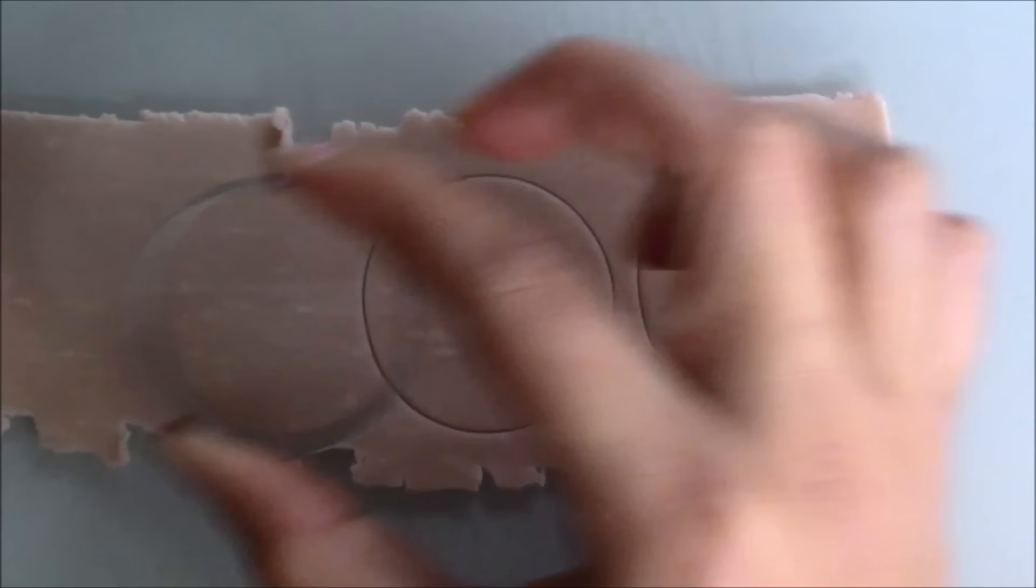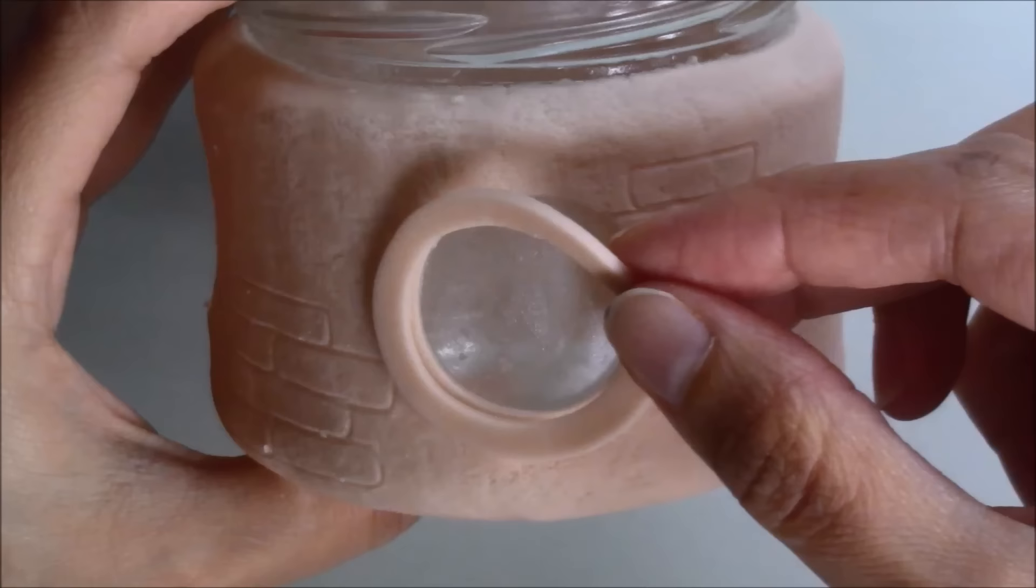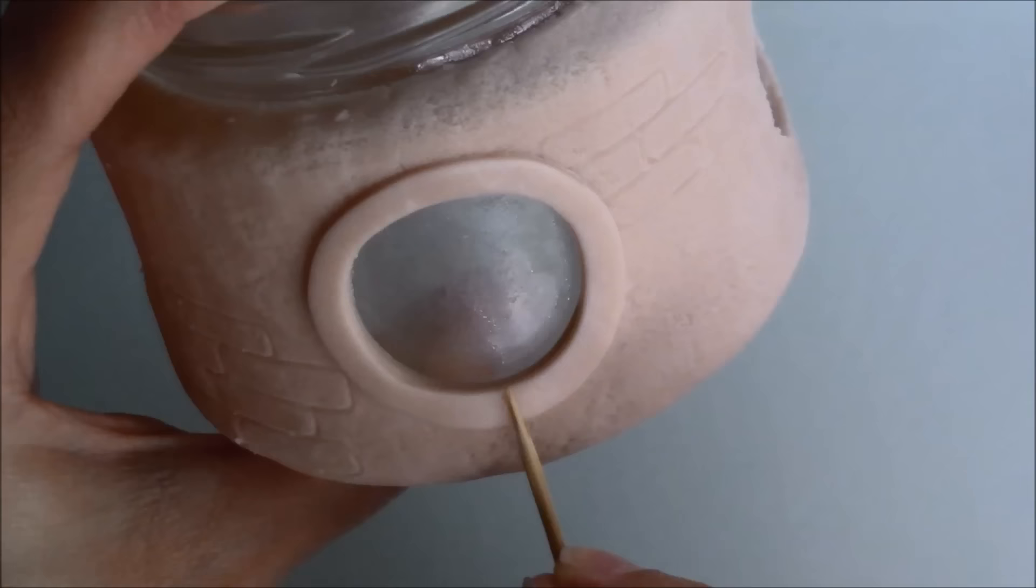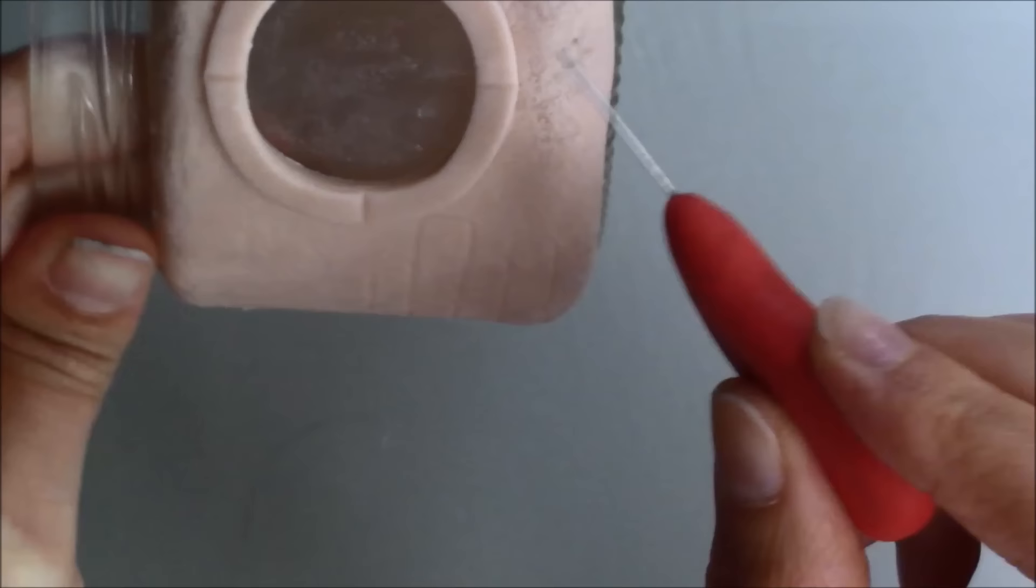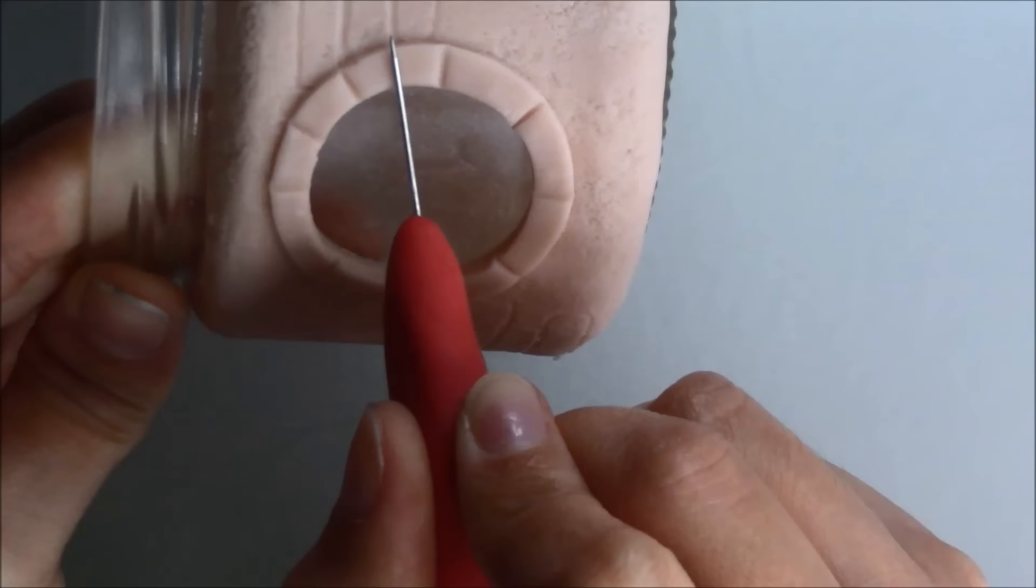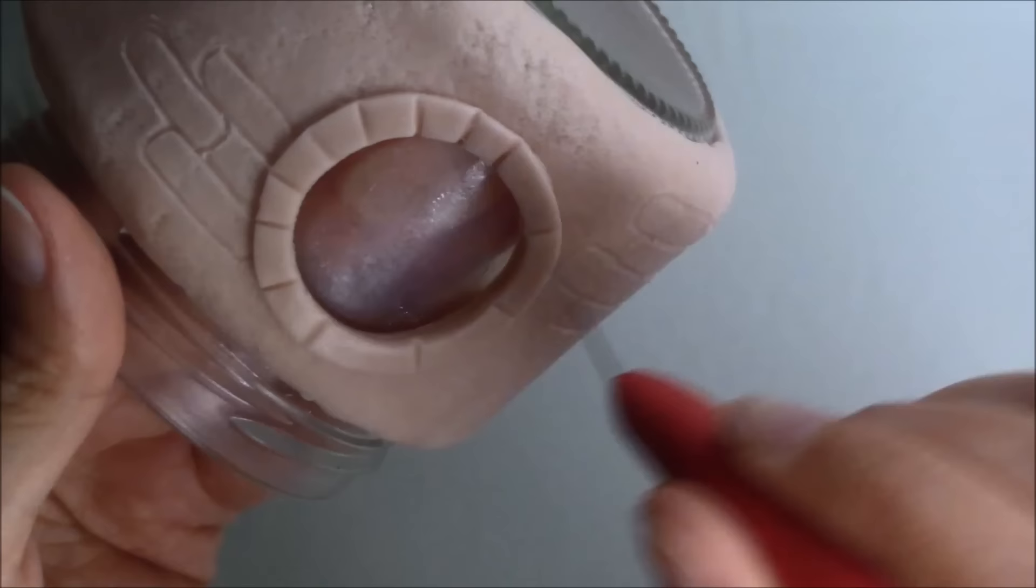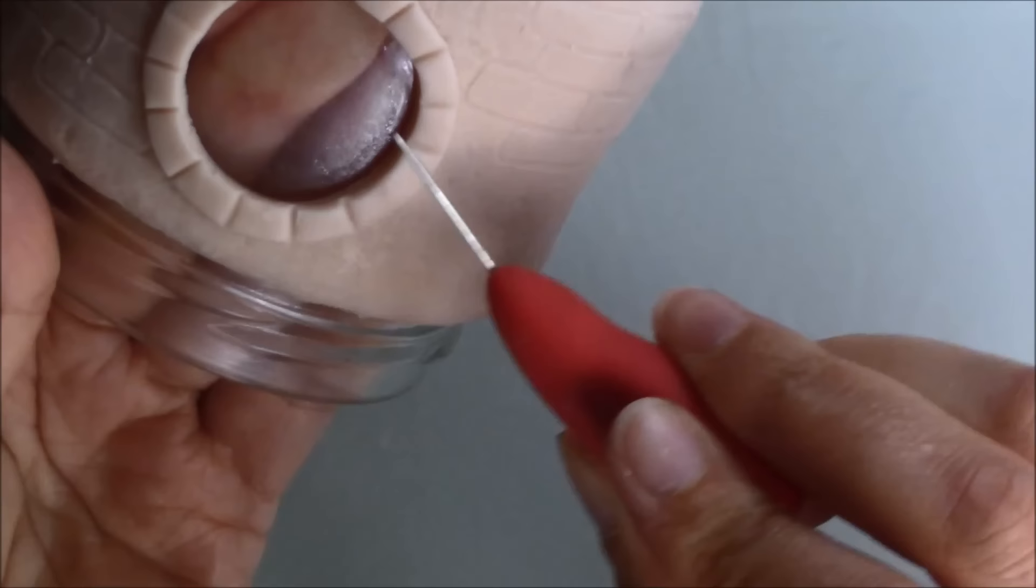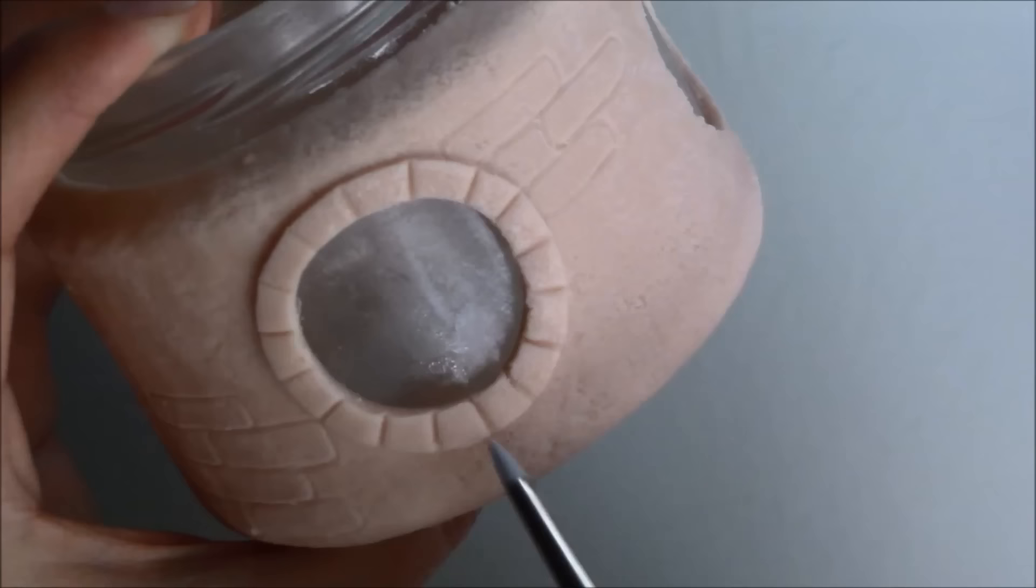To make the stone frames for the windows, I cut out rings in a slightly bigger size than the windows and placed them around them. Then I marked the bricks or stones and added texture to these as well. I rounded the edges up a little using a soft silicone tool.